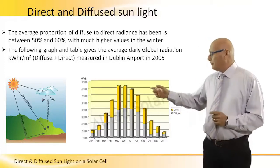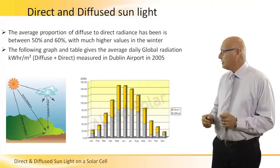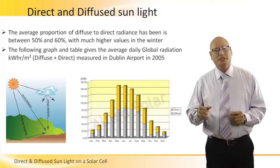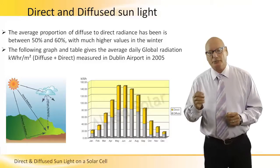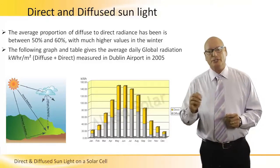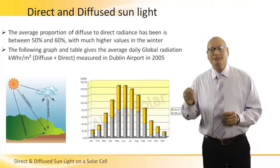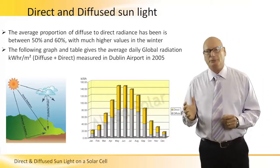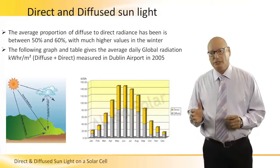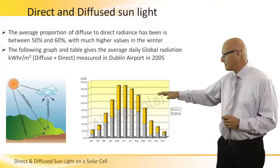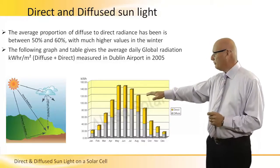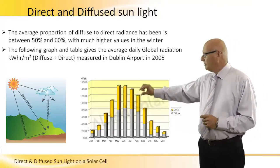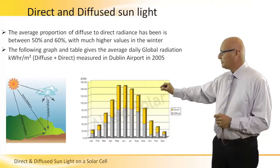In this graph, we can actually see the average global radiation — in kilowatt hours per square meter — of both diffused and direct, measured at Dublin Airport in 2005. We just picked Dublin Airport; it can be any place else. We can see that the gray section of the graph is the diffused one, and the yellow parts are the direct one.